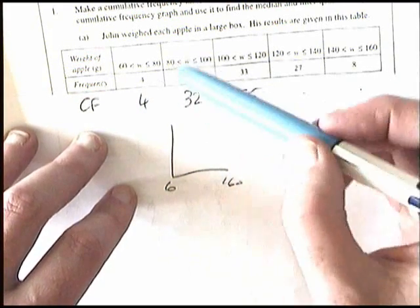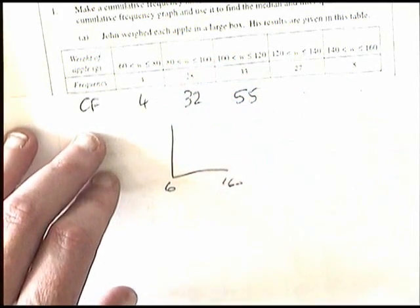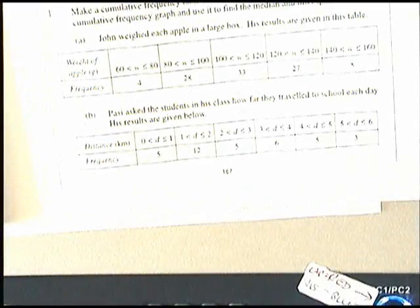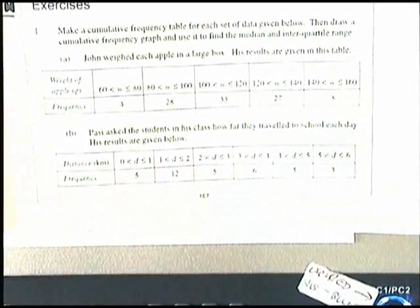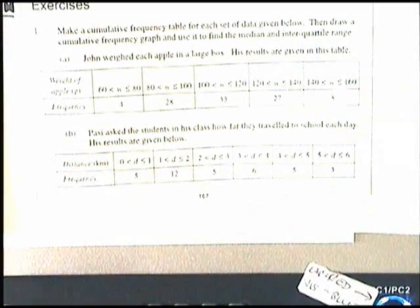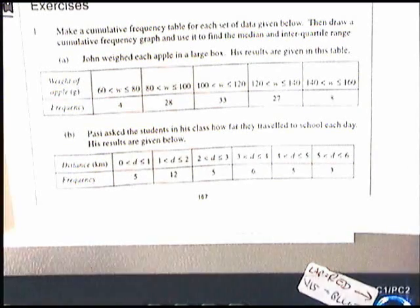Plot the points, so above 80, you will plot 4, above 100, you'll plot 32, and so on. And when you've done that, you then need to find the median and the interquartile range. And to get the interquartile range, you'll need the lower quartile and the upper quartile. There's quite a lot of work involved in these questions.